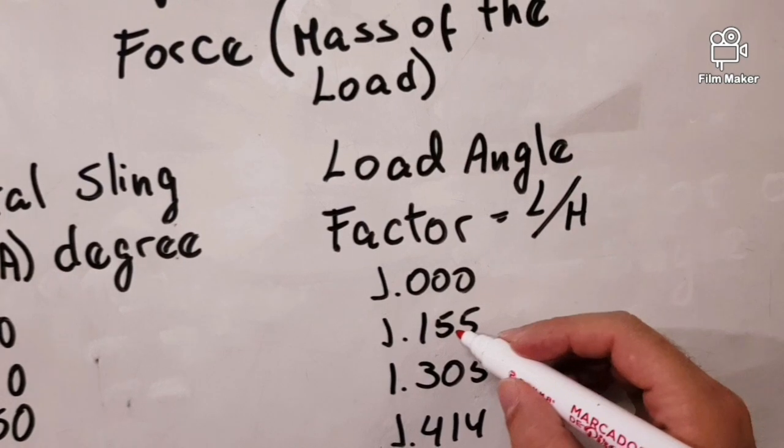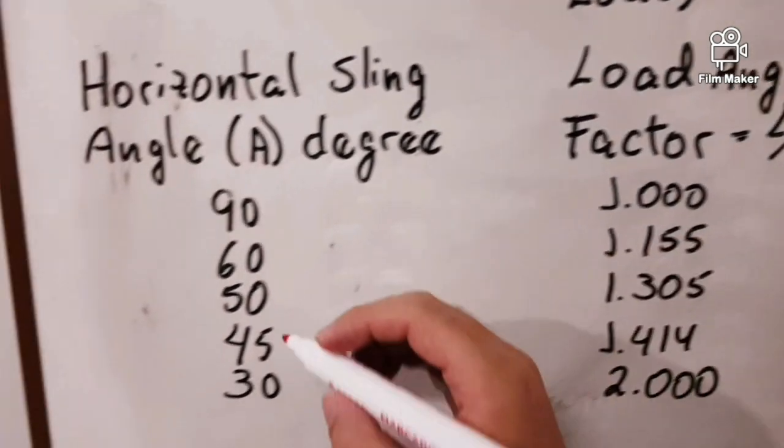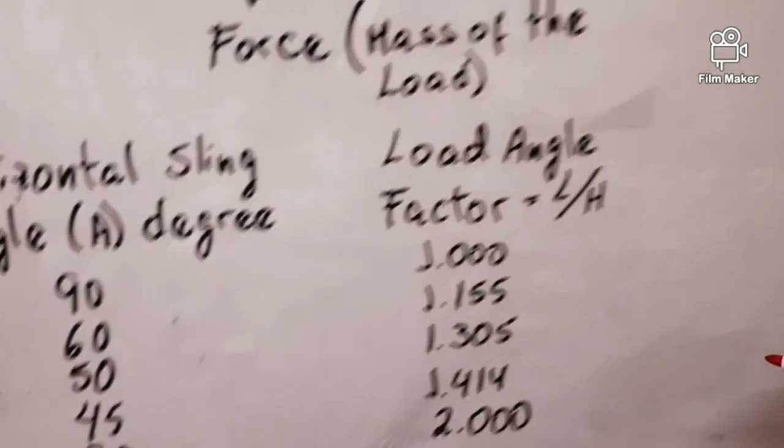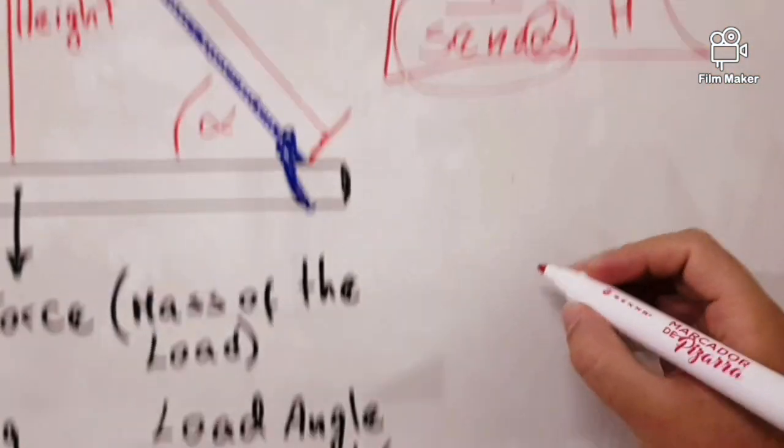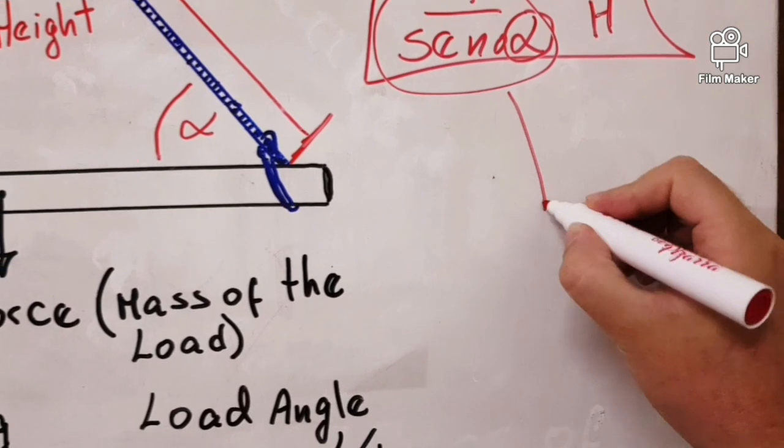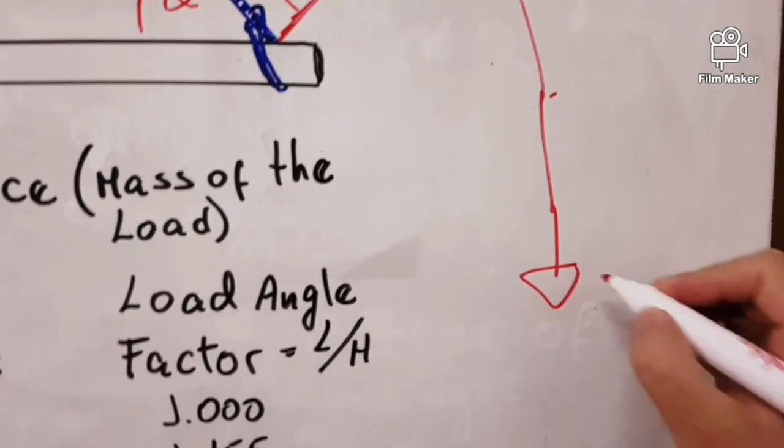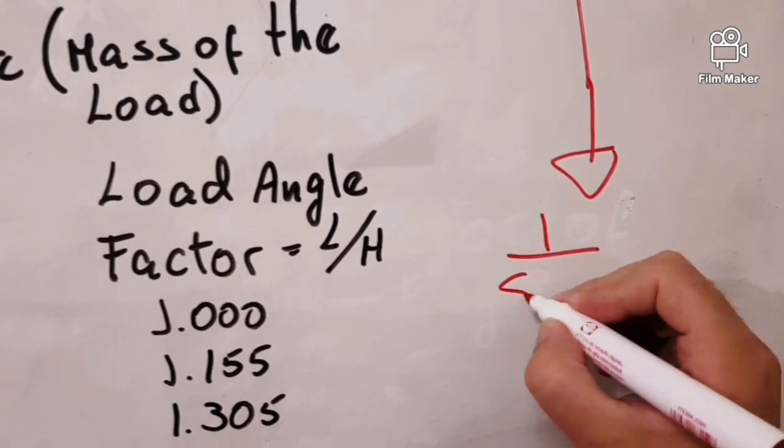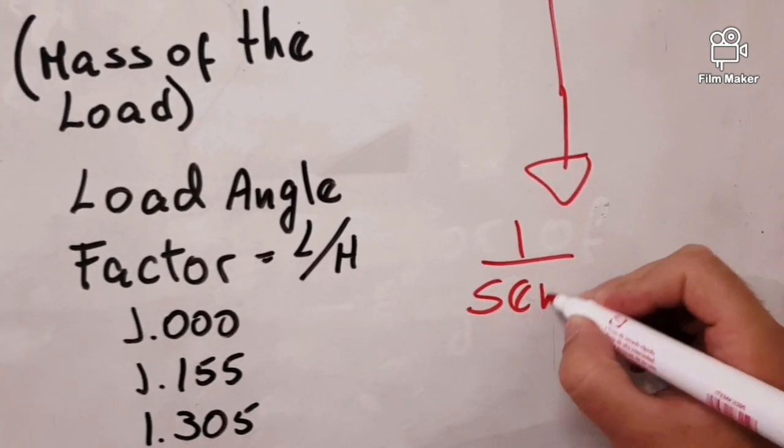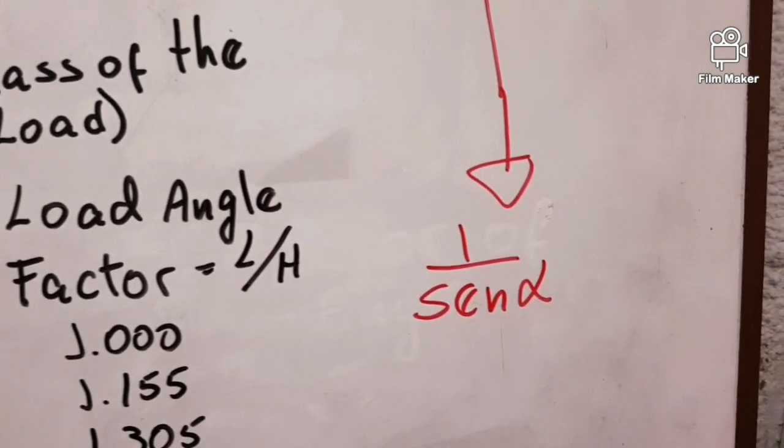If we have 60 degrees, we're gonna have 1.155, and so on. Now we're gonna use 1 divided by the sine of alpha. Now we have alpha here: 1 divided by the sine of 90. Now we're gonna have to use our calculator.